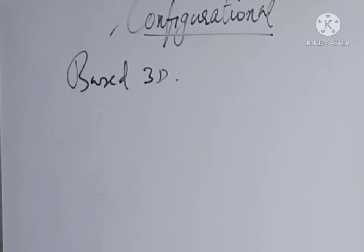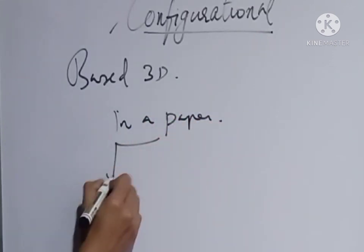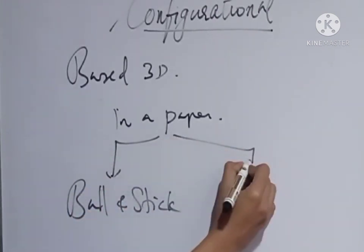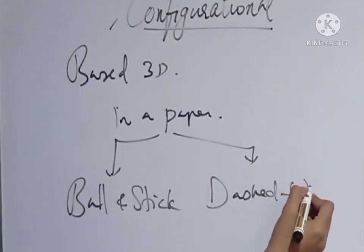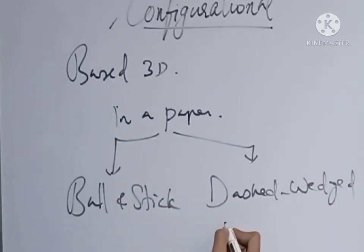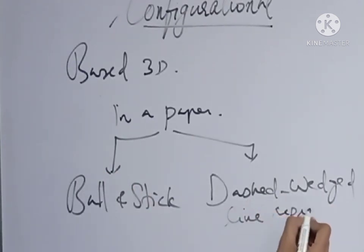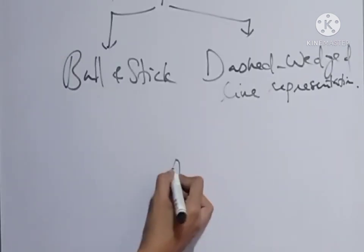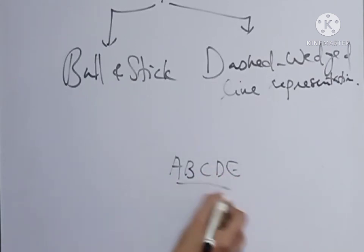The two methods used to represent a three-dimensional molecule on paper are: first, the ball and stick model, and the second one is the dashed and wedged line representation. Consider an atom A attached to four other atoms B, C, D and E, where A is the central atom.